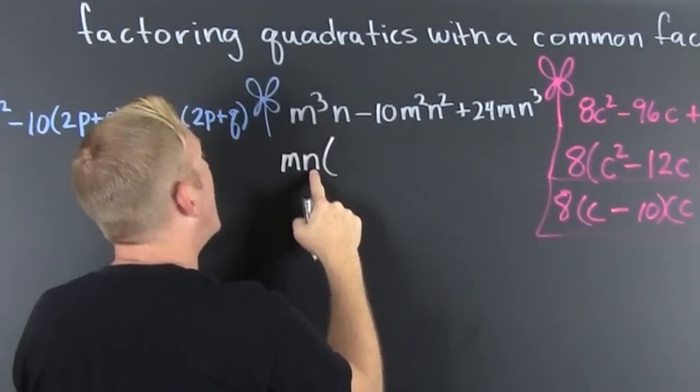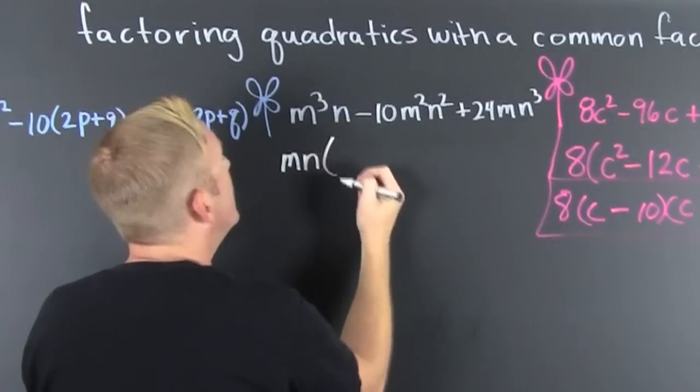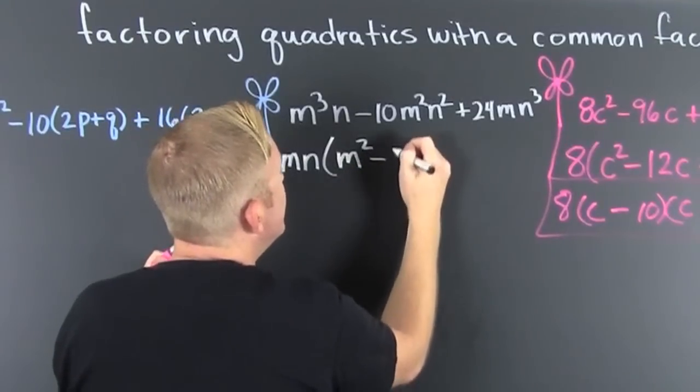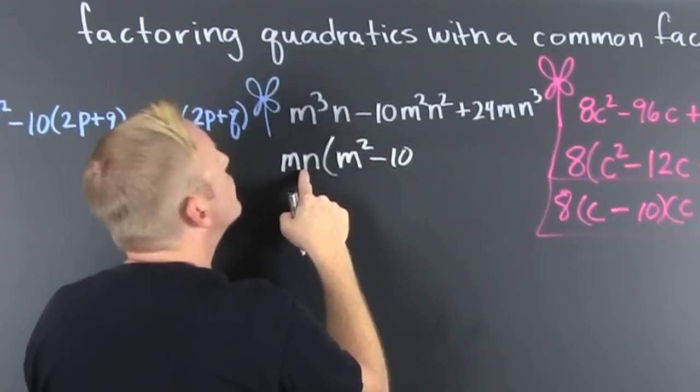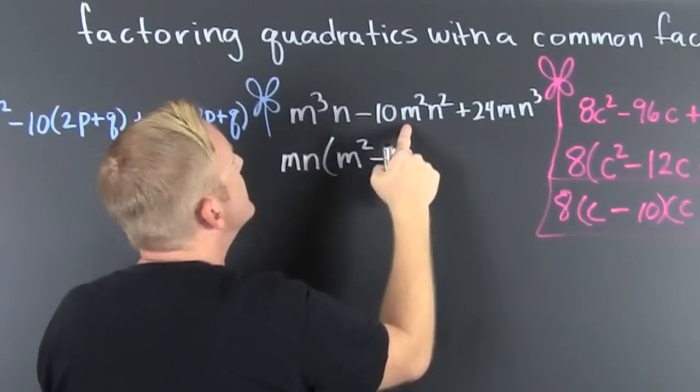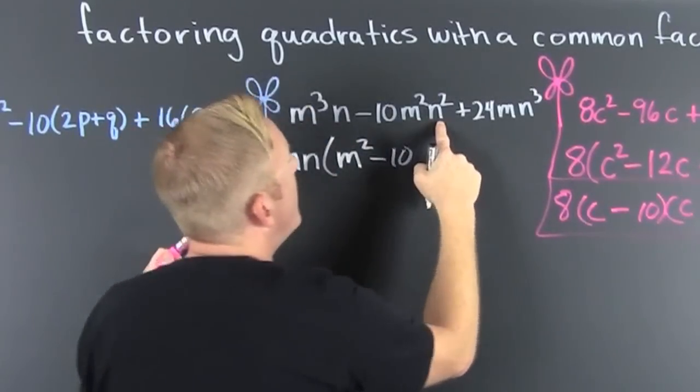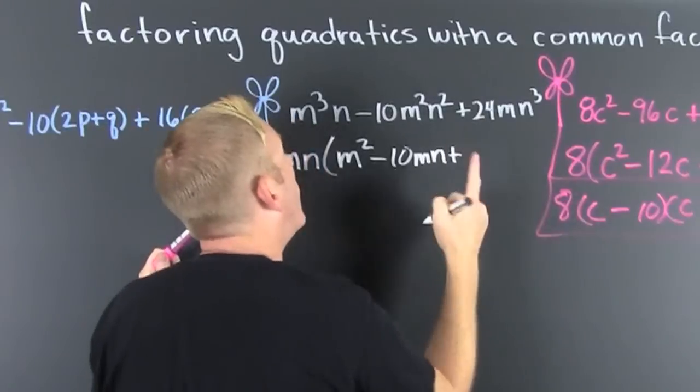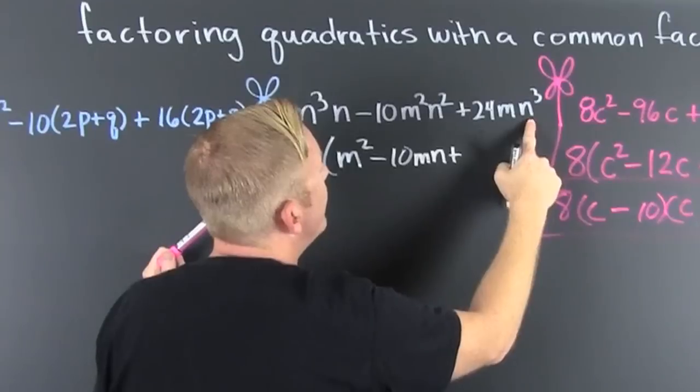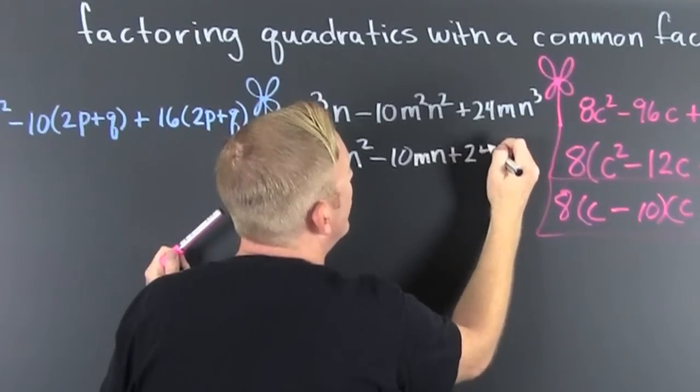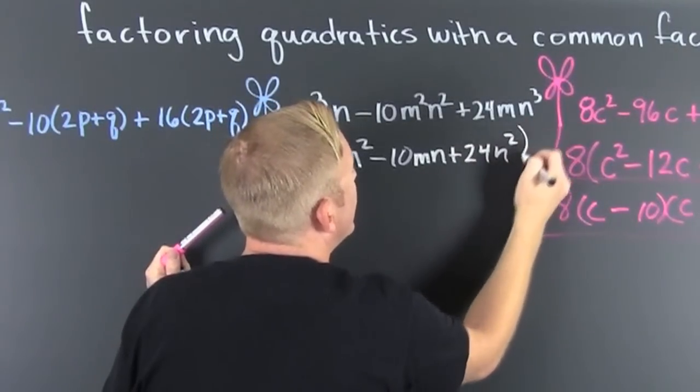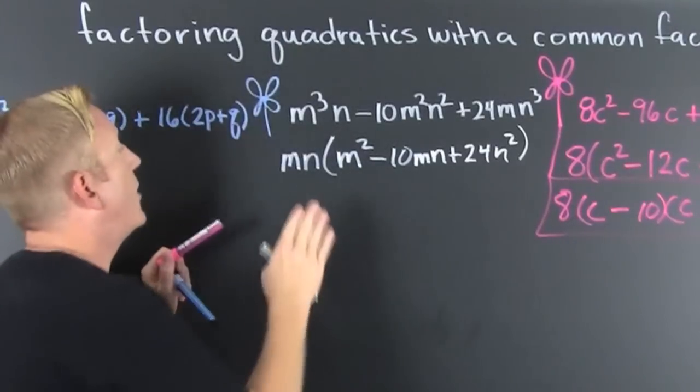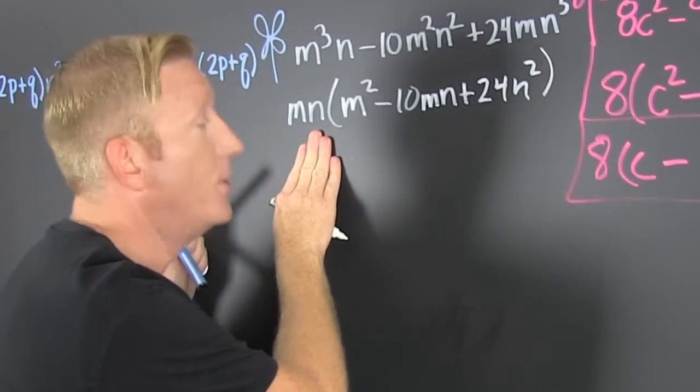Left over on the inside, what do I multiply MN by to get M³N? That's gonna be an M². Minus 10 times, I'm taking out one M and N, so I reduce that by a power of one. So that's M. Plus, there's more. I take out my MN from there and I have 24N².